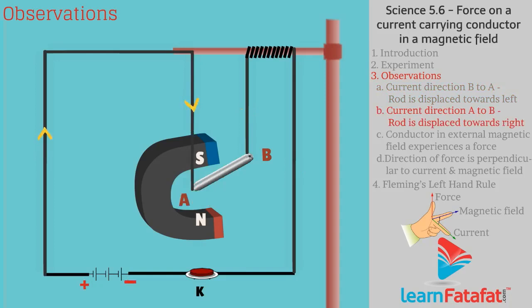And if the direction of current is from A to B, then rod is displaced towards right.